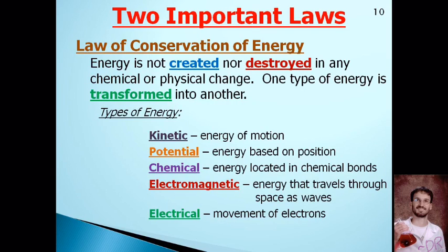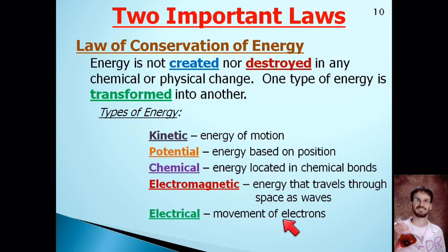Students often confuse electromagnetic energy with electrical energy. Electromagnetic energy involves things traveling through space as waves, while electrical energy is a measurement of the movement of electrons. When a large number of electrons move from one place to another, that is electrical energy — and the more electrons moving, the more current there is.